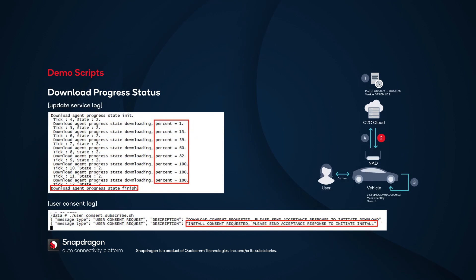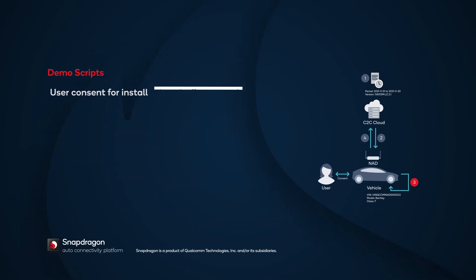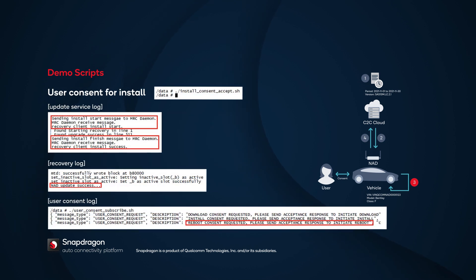You can monitor the progress of the download in the UpdateService log, where you'll see download percentage and the Finish State message. Once the download is finished, the OTA Manager will send user consent to install the firmware. That takes you to Step 3. In Step 3, run the InstallConsentAccept.sh script. The OTA Manager gets the user consent and calls the UpdateService API to install the firmware. In the UpdateService log, you see that UpdateService sends the InstallStart message to the MRC daemon.